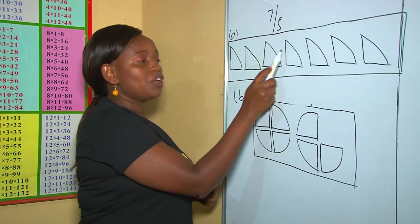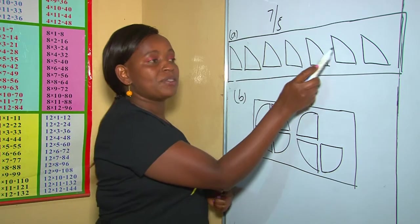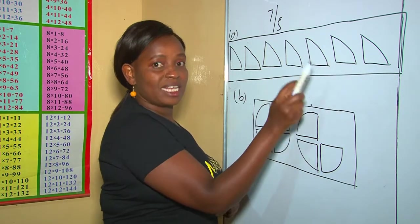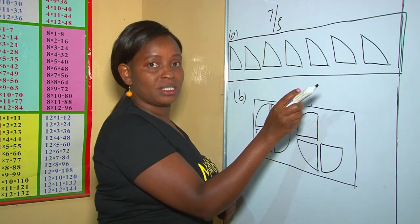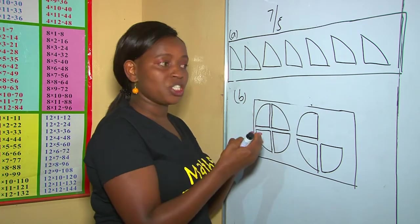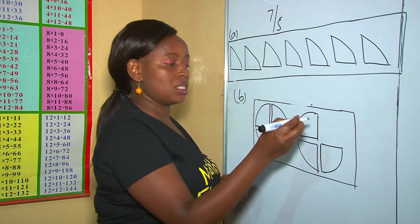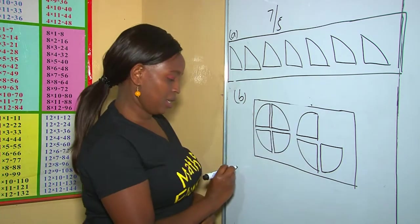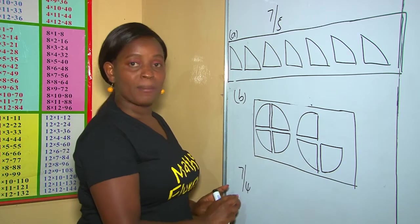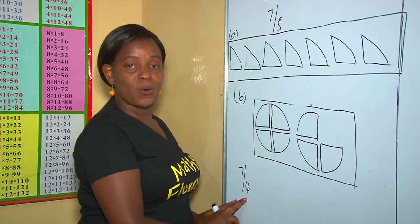1, 2, 3, 4, 5, 6, 7. These are 7 quarters. So, to write that one as a fraction, it's 7 over 4 because they are quarters.